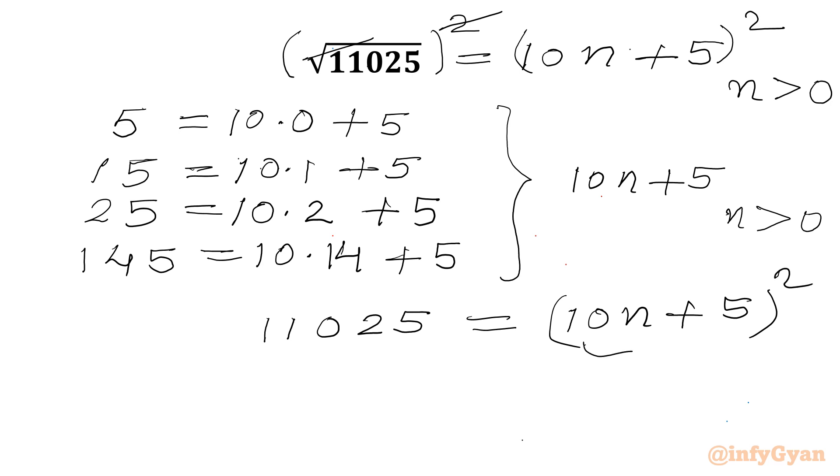Now we can take 5 common from this bracket. So I can write 5 common then in the bracket 2n plus 1, and then we have whole square. Equal to 11,025.